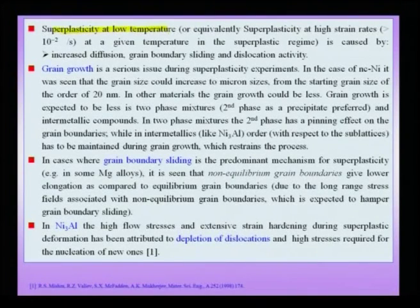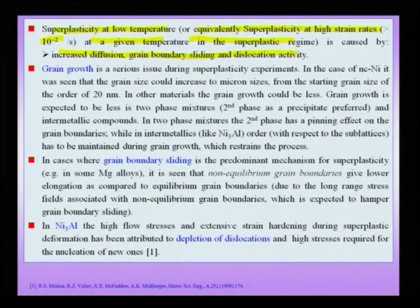We need to understand the mechanisms underlying super plasticity and the issues required to interpret results correctly. Super plasticity at low temperature — or equivalently at high strain rates at a given temperature in the super plastic regime — is caused by increased diffusion, grain boundary sliding, and dislocation activity. Going down to nano-crystalline sizes, grain boundary sliding becomes prominent, accompanied by diffusion and dislocation activity.